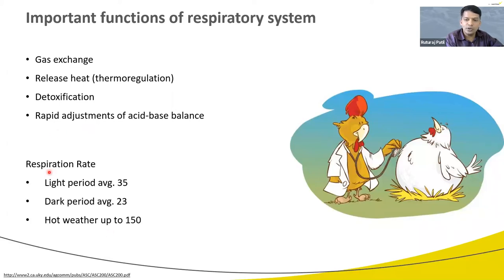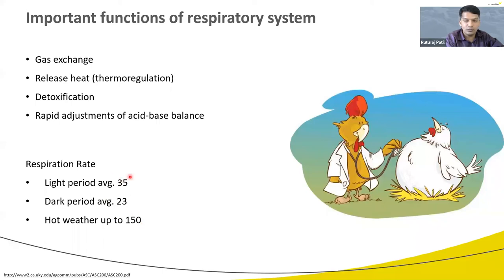Respiration rate per minute in birds also varies a lot. During the light period the respiration rate averages 35 per minute, and during the dark period around 23 per minute. During hot weather the respiration rate can go up to 150 per minute. In adult humans, the rate is between 12 and 20 — this comparison shows how fast and efficiently the bird's respiratory system works during heat stress for thermoregulation.